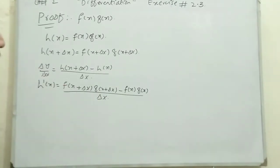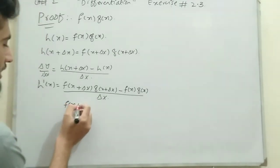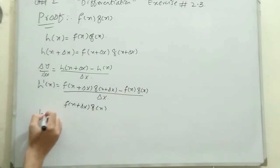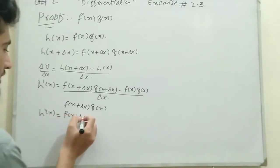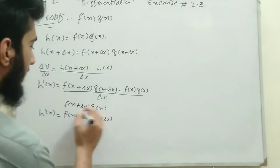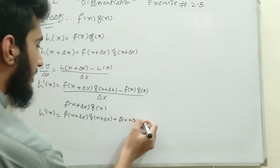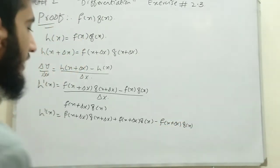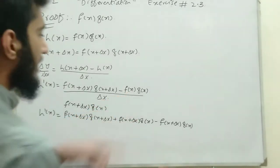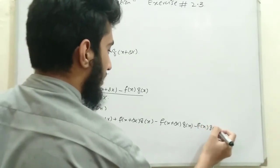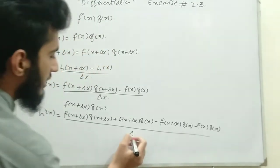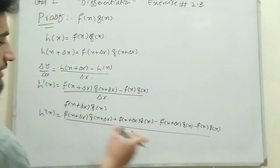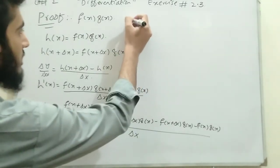Now we add and subtract f(x + Δx) · g(x) in the numerator. So h'(x) = [f(x + Δx) · g(x + Δx) + f(x + Δx) · g(x) - f(x + Δx) · g(x) - f(x) · g(x)] / Δx. In this step we simply add and subtract f(x + Δx) · g(x); the expression remains the same.